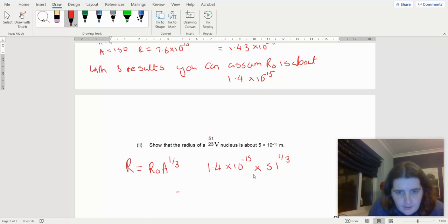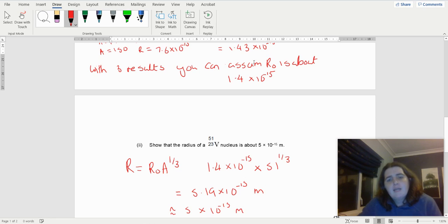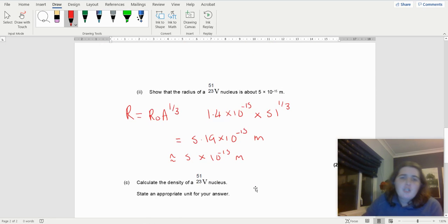And I get an answer of 5.19 × 10⁻¹⁵ meters, which is approximately 5 × 10⁻¹⁵ meters. So when you're doing a show that question, you need to show that you can't go backwards, you have to go forwards.